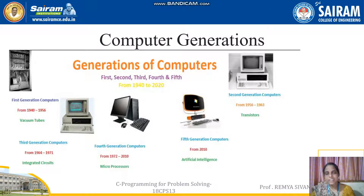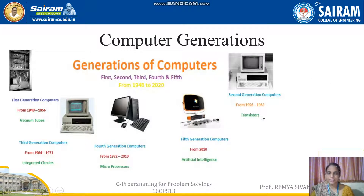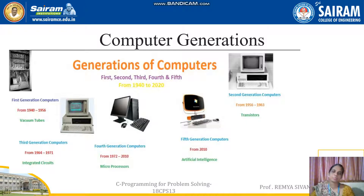Based on technology, computers are divided into five generations. First generation computers used vacuum tubes. Second generation computers used transistors. Third generation computers used integrated circuits. Fourth generation computers used microprocessors. From the fifth generation onwards, computers started to use artificial intelligence. Let us now see each generation in detail.